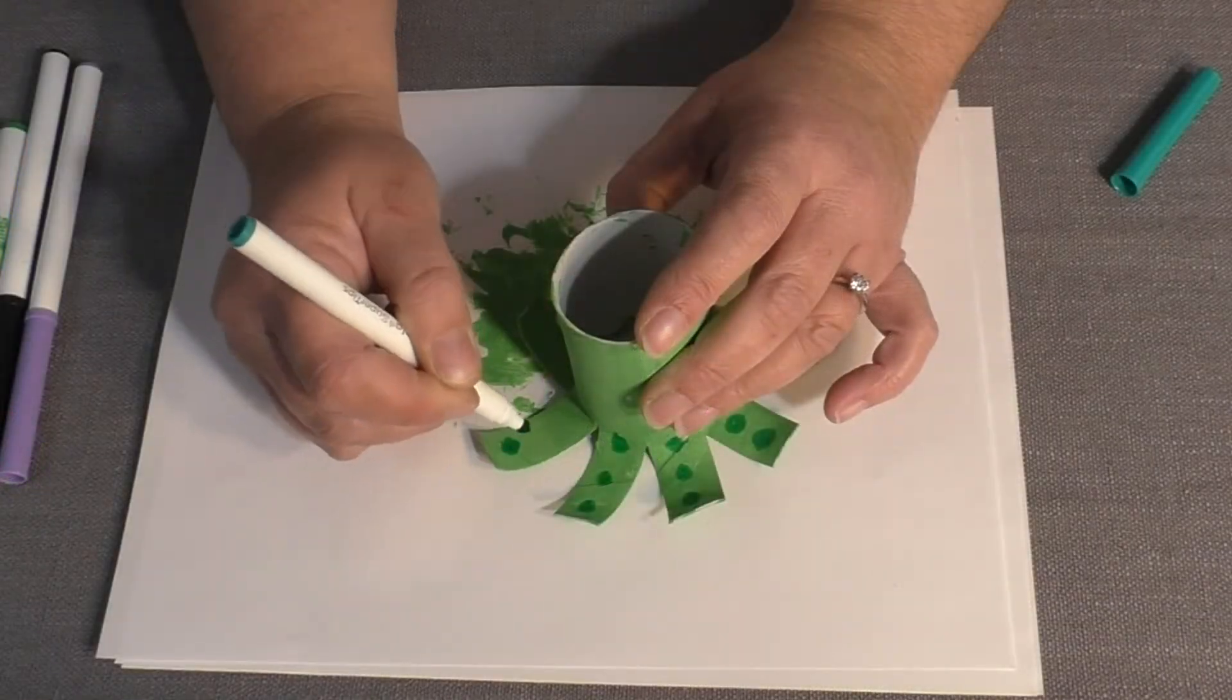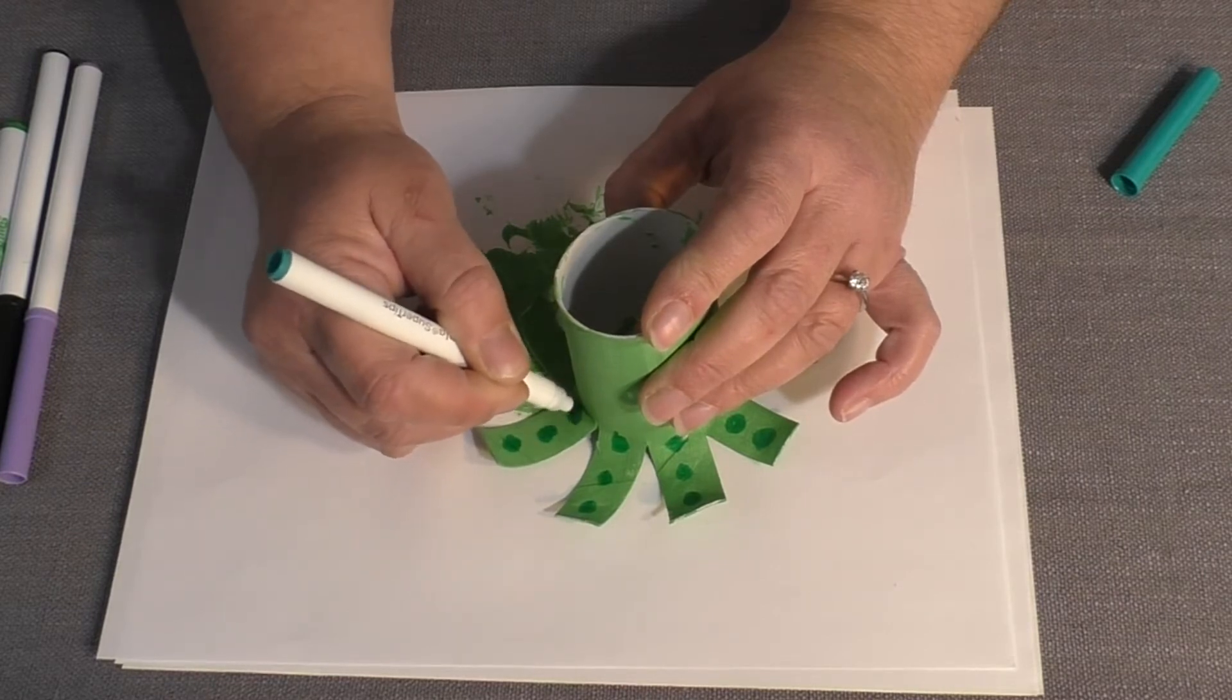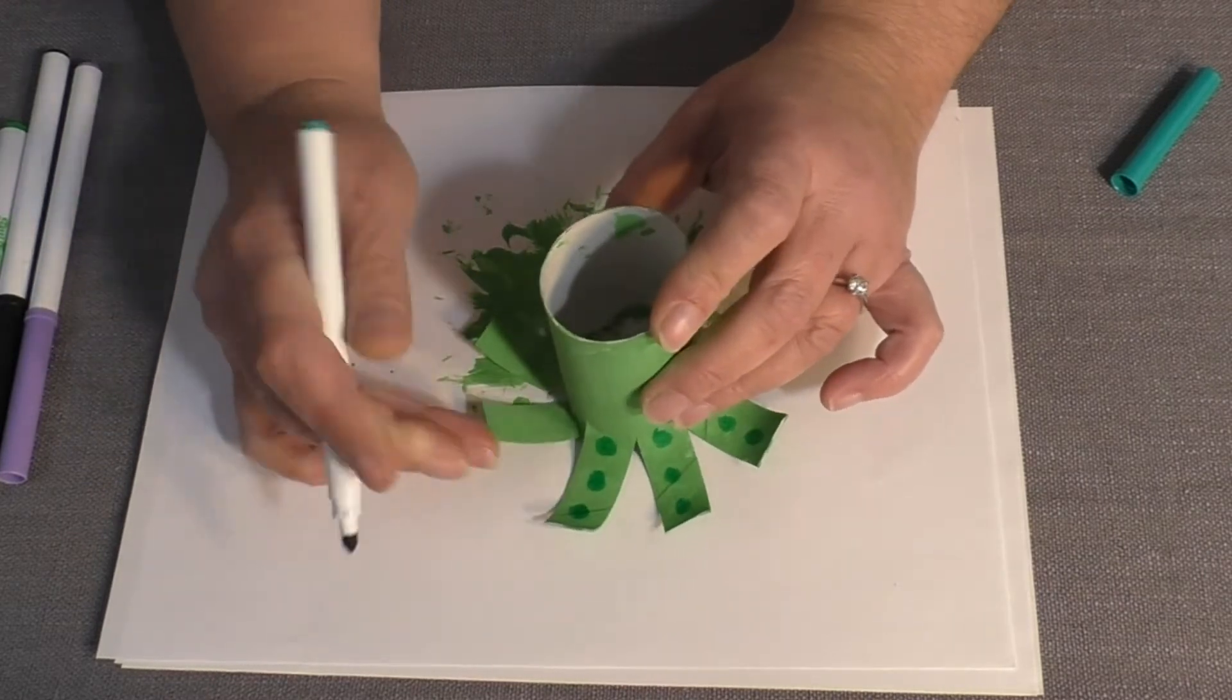Step 5. Decorate. Use your markers, draw dots on the arms to show off the octopus suction cups, and then draw on a fun face.